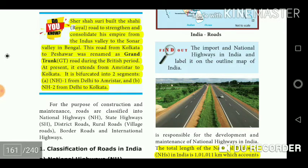Shershah Suri built the Shahi Royal Road to strengthen his empire from the Indus Valley to the Sonar Valley in Bengal. This road from Kolkata to Peshawar was renamed as Grand Trunk (GT) Road during the British period. At present it extends from Amritsar to Kolkata and is bifurcated into two segments: NH1 from Delhi to Amritsar, and NH2 from Delhi to Kolkata.